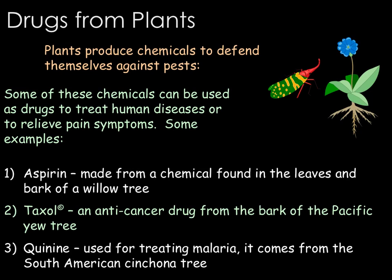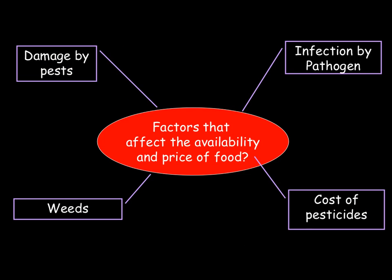These defences are very important for plants as lots of crops are lost each year because of pests and insects. We will look later in this B3 video tutorial series at how we can genetically modify plants to be more insect resistant. There are lots of factors that can affect the availability and price of food. First of all, we have damage by pests.